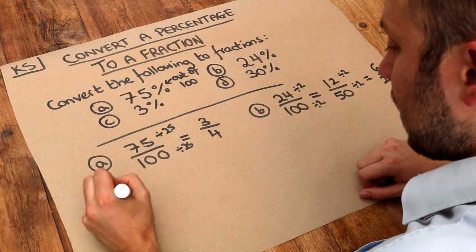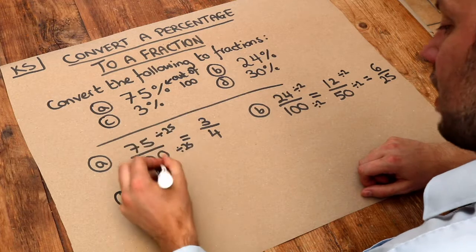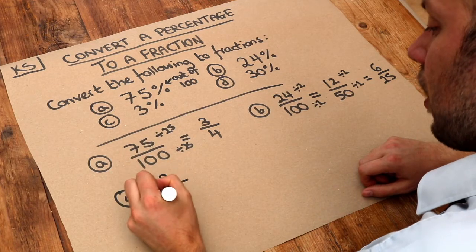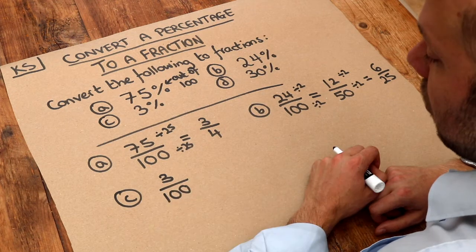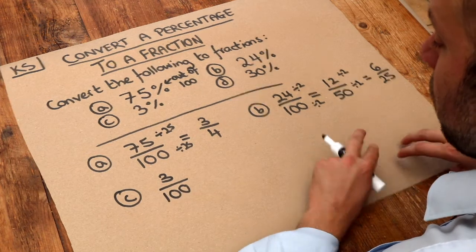Now these last ones are actually a bit easier. 3% is 3 over 100, and that we can't simplify any further because 3 and 100 don't share any factors in common except for 1.